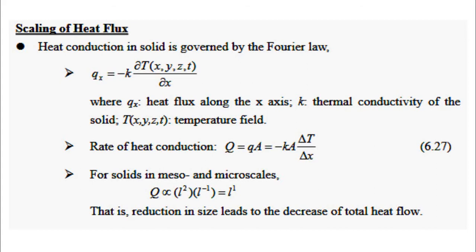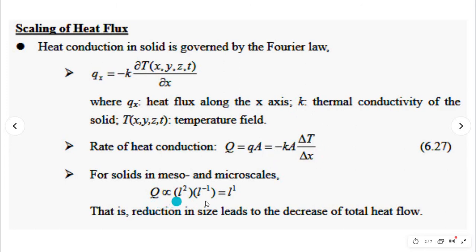Converting to linear scaling form: instead of A we write L², and instead of Δx we write L. The other terms are not significant in the case of scaling. So Q is proportional to L² times L⁻¹, which equals L¹. This means that a reduction in size leads to a decrease of total heat flow proportionally.